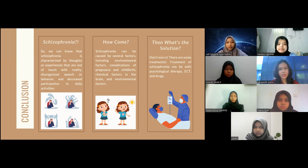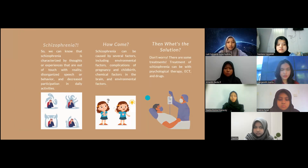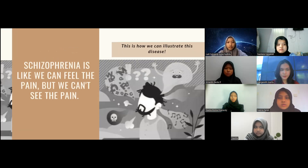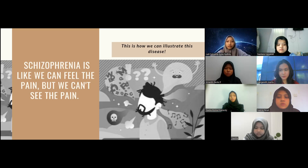What is the solution? Don't worry, there are some treatments. Treatment of schizophrenia can involve physical therapy, ECT, and drugs. As explained at the beginning of this presentation, the description of mental disorder, for example schizophrenia, is like we can feel the pain but we cannot see the pain. We go through a life of invisible suffering, so not everyone can see it. After this whole discussion, we know why our group describes schizophrenia in that way.